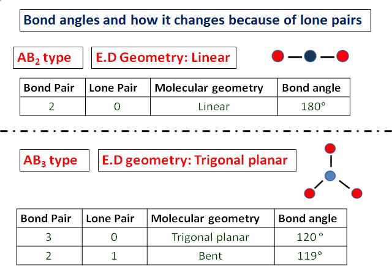When there are two bond pairs and one lone pair, the molecular geometry becomes bent and the bond angle changes to less than 109 degrees. In another video, we have examples for all of them and a consolidated list of all these as well.